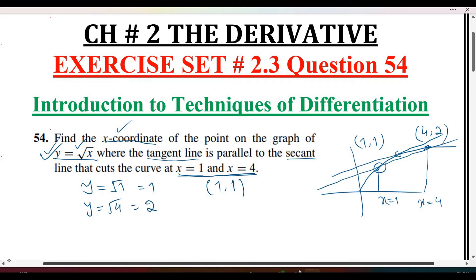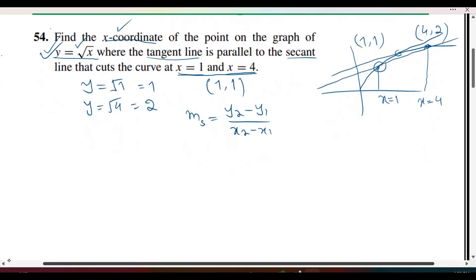Now we calculate the slope of the secant line using the slope formula: y2 minus y1 divided by x2 minus x1. We get 2 minus 1 over 4 minus 1, which gives us 1 over 3. So the slope of the secant line is 1/3.